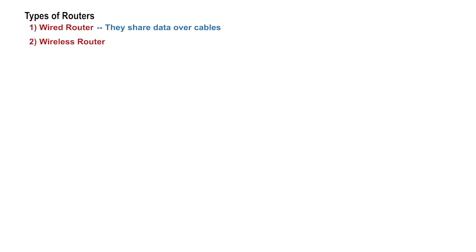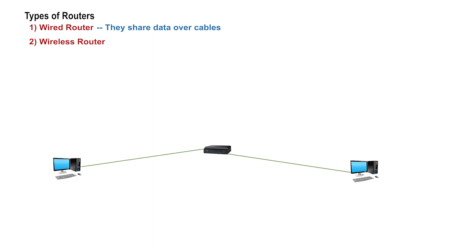Now let's look at some types of routers. First, wired routers. Wired routers share data over cables and create wired local area networks, or LANs. In this illustration, we can create a LAN network by connecting a router through a cable medium. This router could also be connected to the internet through an ISP — an internet service provider.